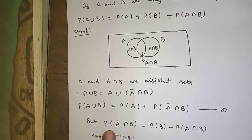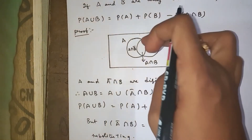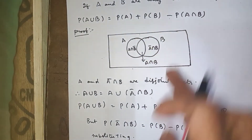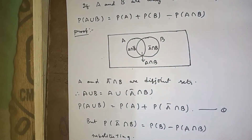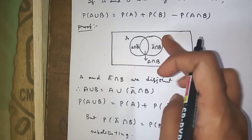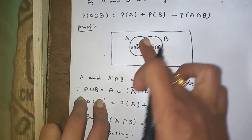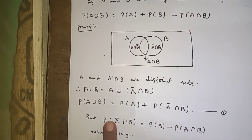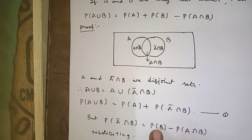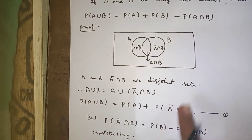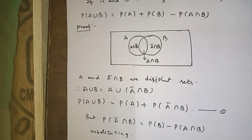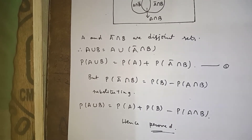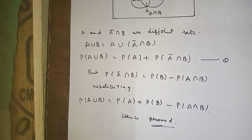Now, P(Ā ∩ B) is the right part only. From the whole B, if you remove P(A ∩ B), you get P(Ā ∩ B) = P(B) − P(A ∩ B). Substituting this above, you get P(A ∪ B) = P(A) + P(B) − P(A ∩ B). This is the theorem — hence proved.